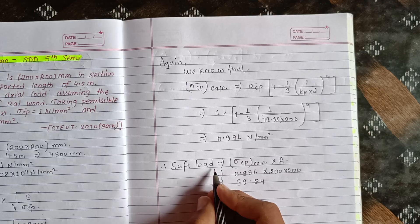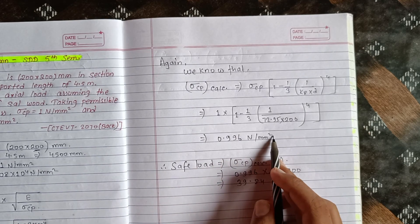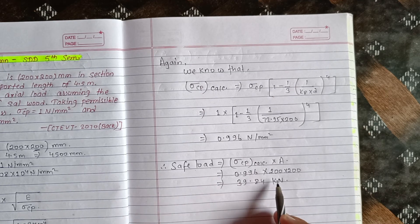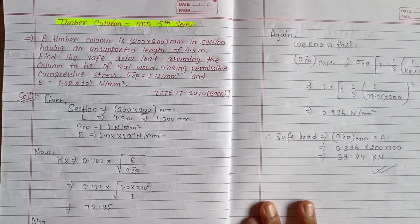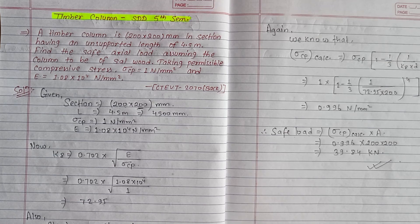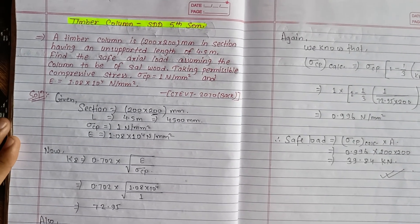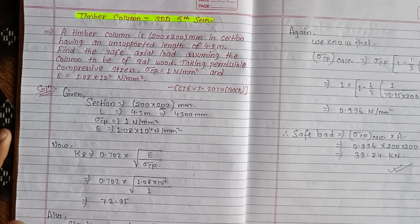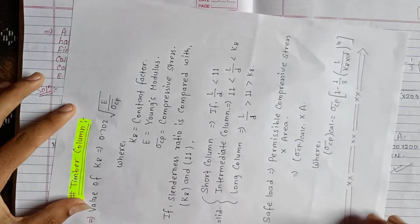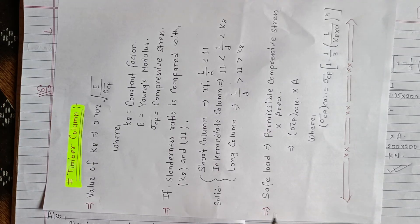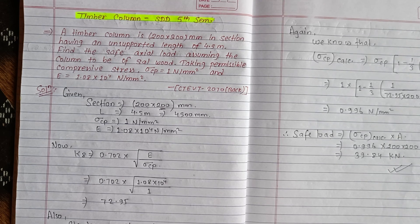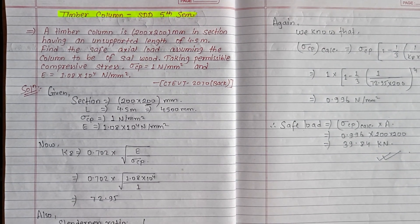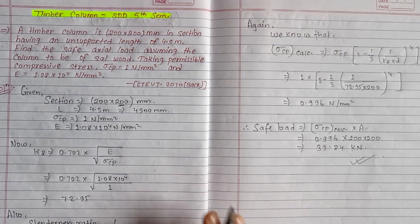Therefore, Safe Load = σcp_calculated × area = 0.996 × 40,000 ≈ 39.84 kN. This is the safe load for the timber column. The video covered short, intermediate, and long column classification for timber. Thanks for watching and take care.